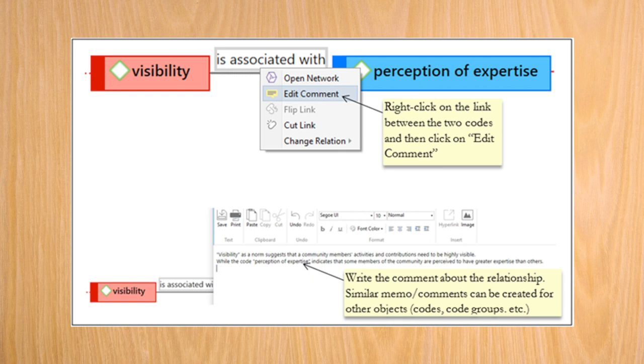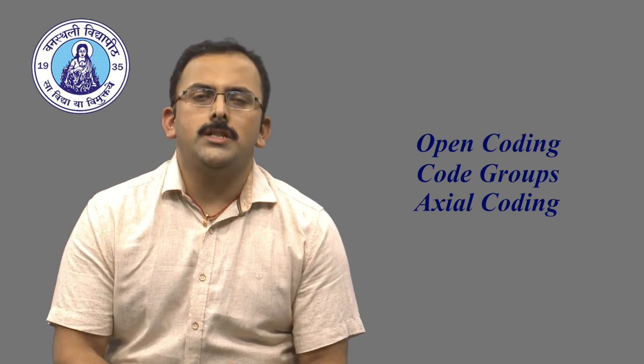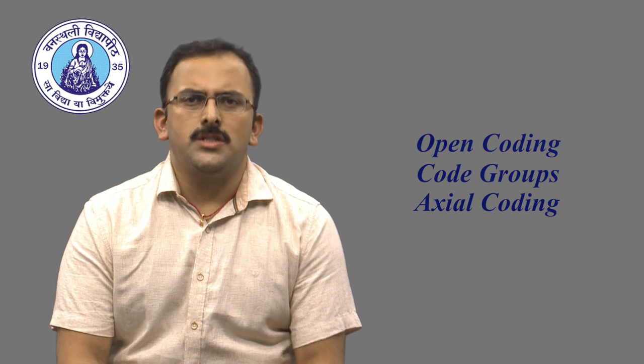Note that much like open coding, axial coding is also iterative. So, over time, you will create new relationships, modify the existing ones, add or edit explanations in the memos and so on. In sum, if you jointly view the three steps that is open coding, code groups and axial coding, they give a glimpse into how the researcher systematically progresses from raw qualitative data to more abstract codes and relationships.